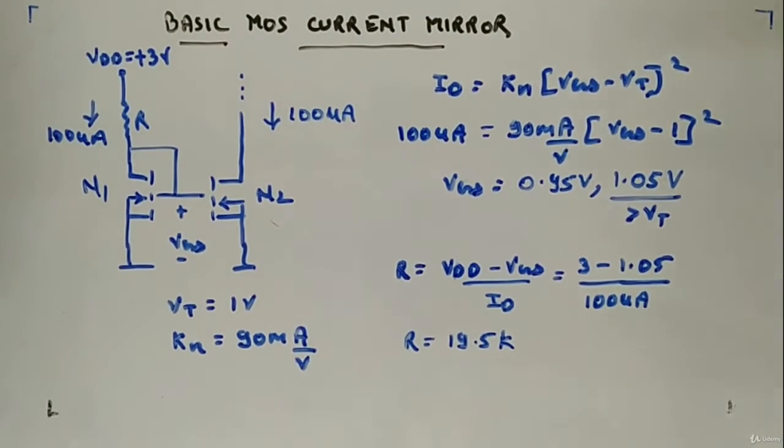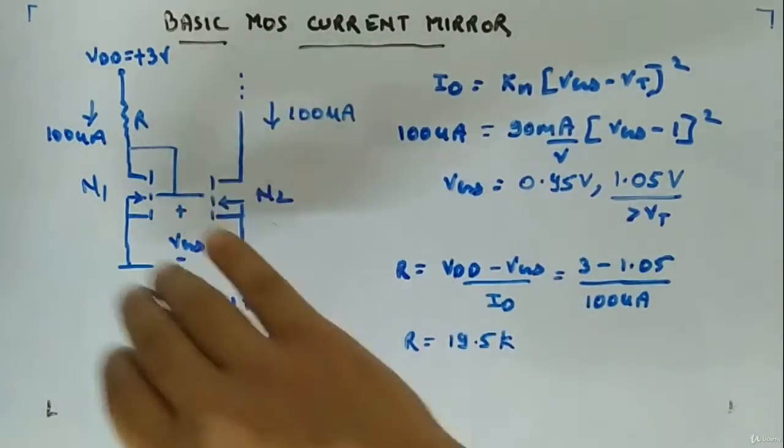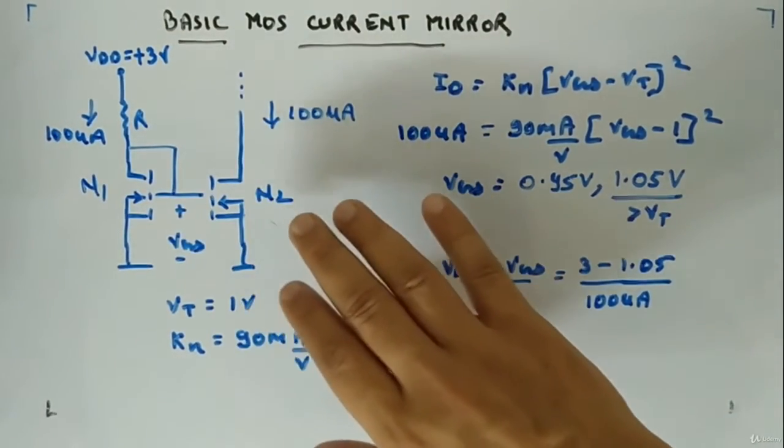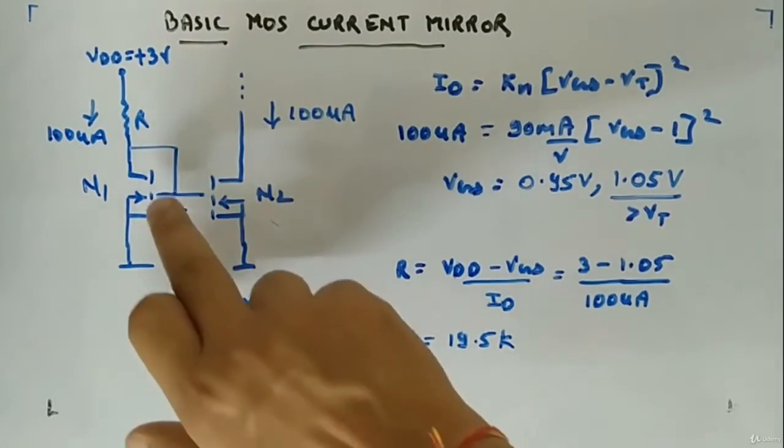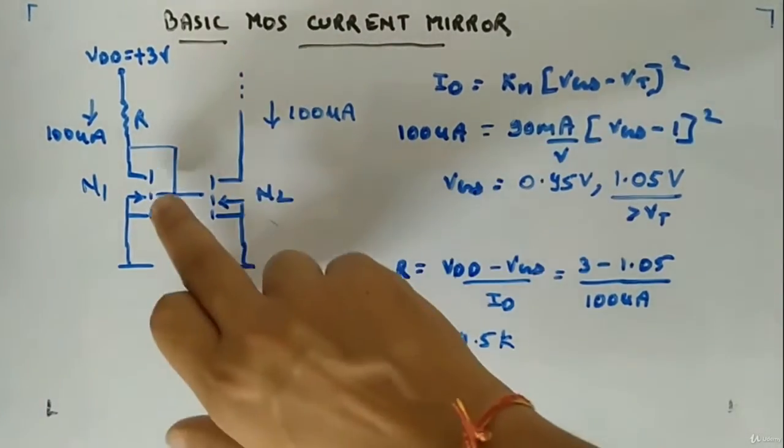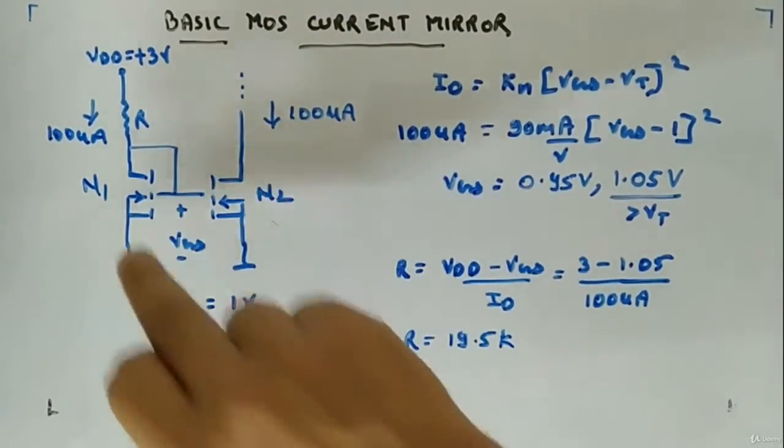Okay, now let's look at the basic MOS current mirror circuit. This is how it will look like - it is exactly similar to BJT type, so ground ground. Now we have NMOS here, enhancement type NMOS. You can see we have seen this representation before.